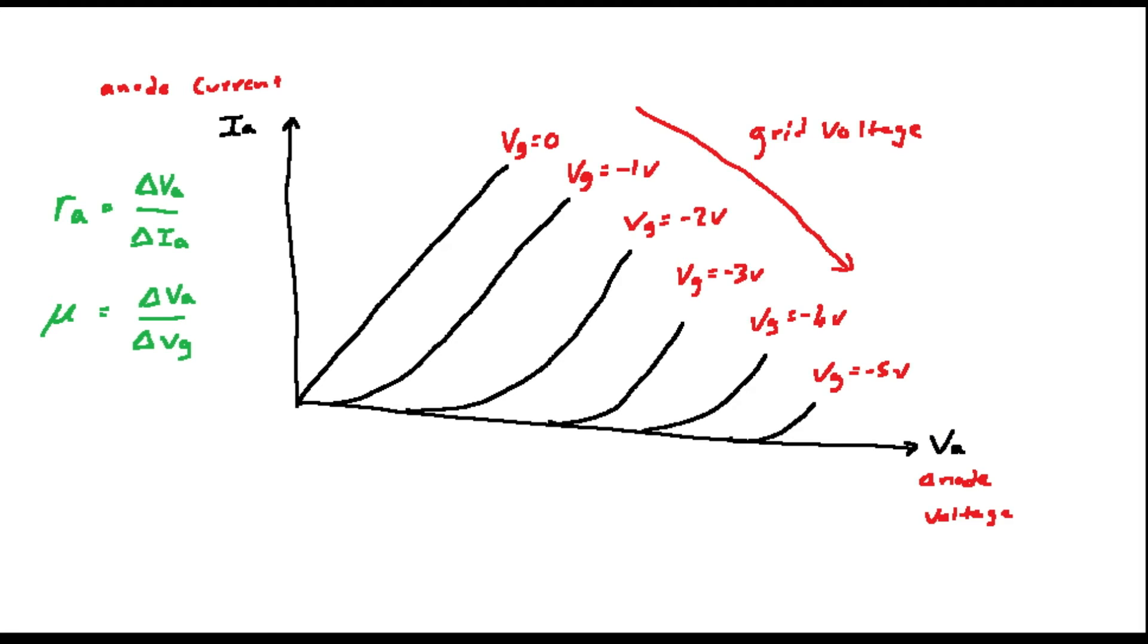All three of the terms that we have just described are related by the following equation: GM is equal to mu over RA.